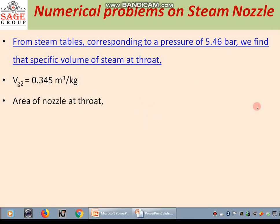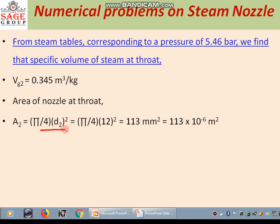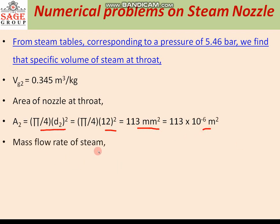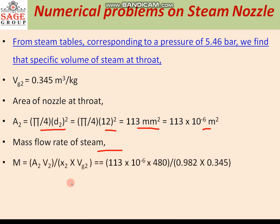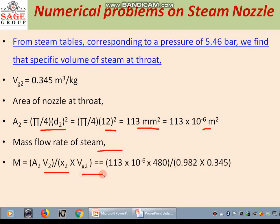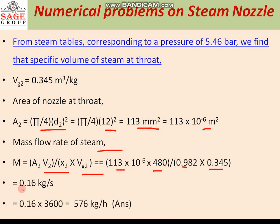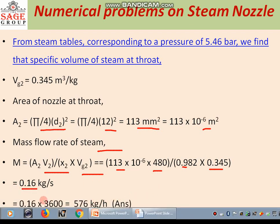The area of the nozzle at the throat is obtained from A equal to pi by 4 times D2 squared, so pi by 4 into 12 squared gives 113 mm squared, equal to 113 into 10 to the power minus 6 square meter. The mass flow rate of steam M equal to A times V2 divided by (x2 times VG2), that is 113 into 10 to the power minus 6 into 482 divided by (0.982 into 0.345). This gives a value of 0.16 kg per second, equal to 576 kg per hour. This is the answer for this question.